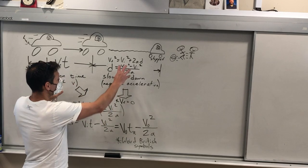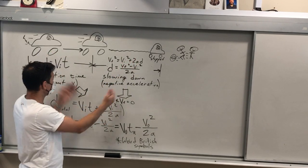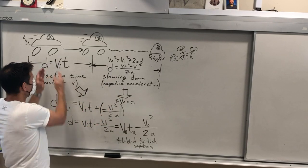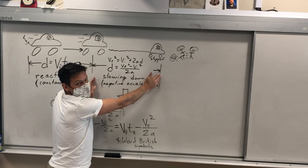And if you just take those two and add them together, because we're just adding the two displacements together, right? It goes this distance while you're reacting, and this distance while you're slowing.